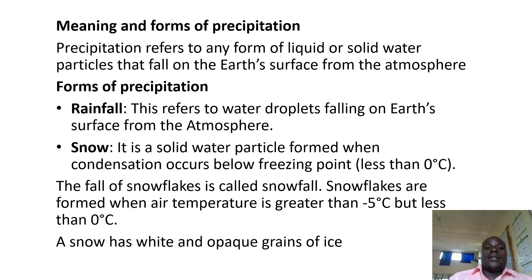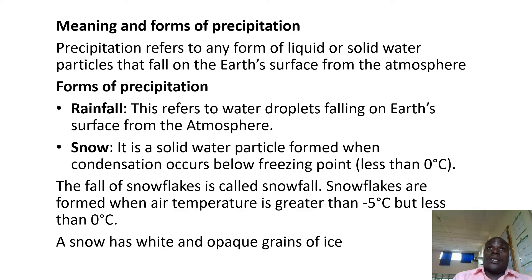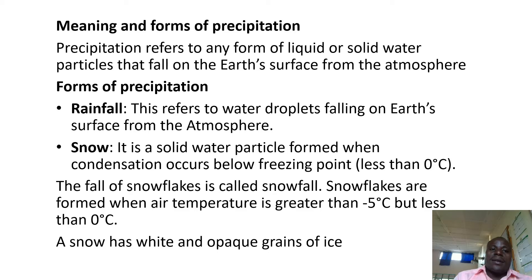Let us look at different forms of precipitation. Don't confuse forms of precipitation with types of rainfall, because rainfall is a form of precipitation. If they ask you to explain any three forms of precipitation, don't begin explaining types of rainfall like cyclonic rainfall, relief rainfall, and convection rainfall. Those are not forms of precipitation — they are types of rainfall.